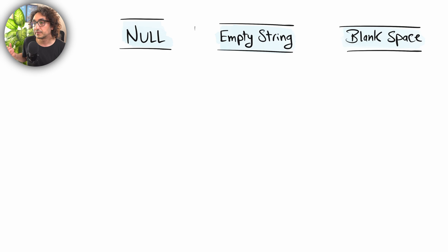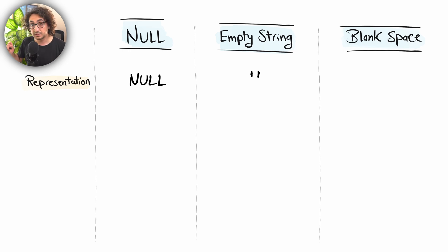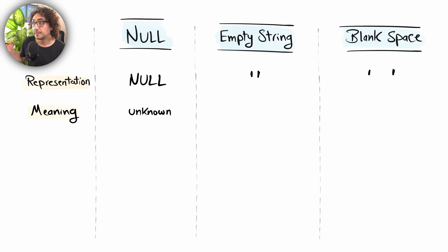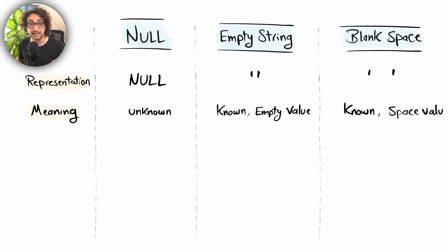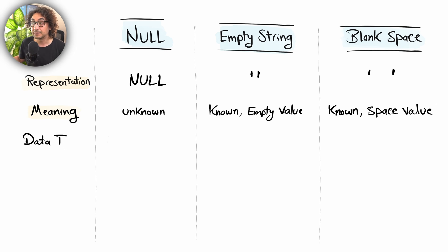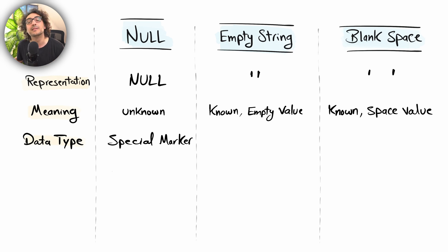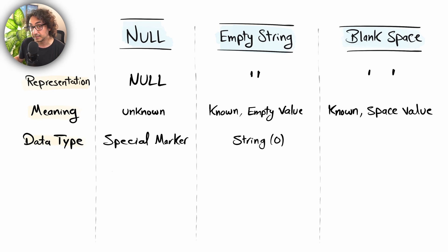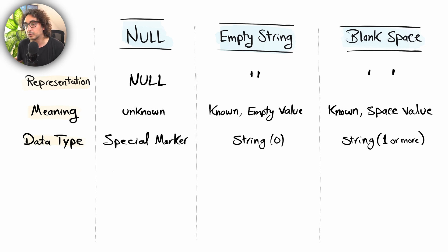Let's compare the three scenarios side by side. In terms of representation: NULL appears as 'NULL' in the table, the empty string appears as two quotes with nothing between them, and the blank space appears as two quotes with one or many spaces. In terms of meaning: NULL means unknown, empty string means known but nothing, blank spaces are known and the spaces are the value. For data types: NULL has no data type, empty string is a string of size zero, and blank space is a string of size one or more.